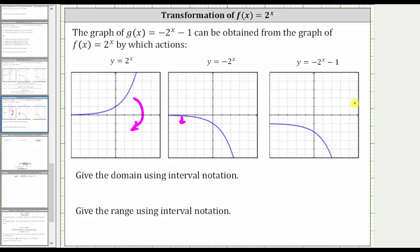Notice how g of x does have a horizontal asymptote of y equals negative 1. The domain is the set of all possible inputs or x values. X can be any real number, and therefore the domain is all real numbers, which using interval notation is the open interval from negative infinity to positive infinity.